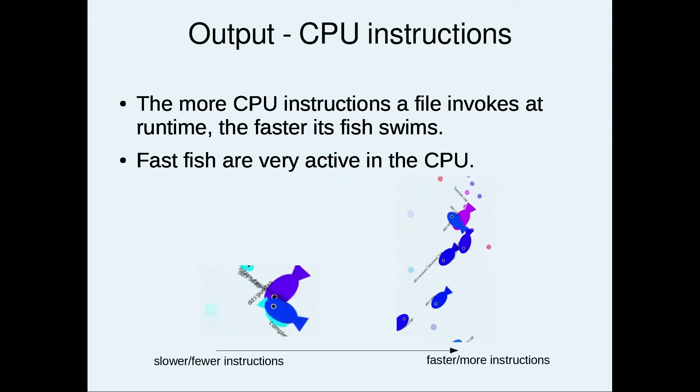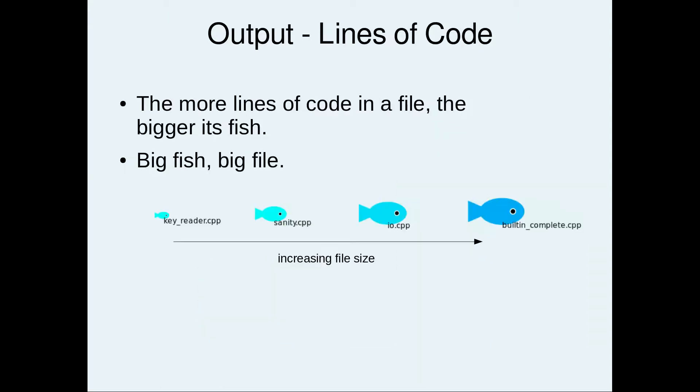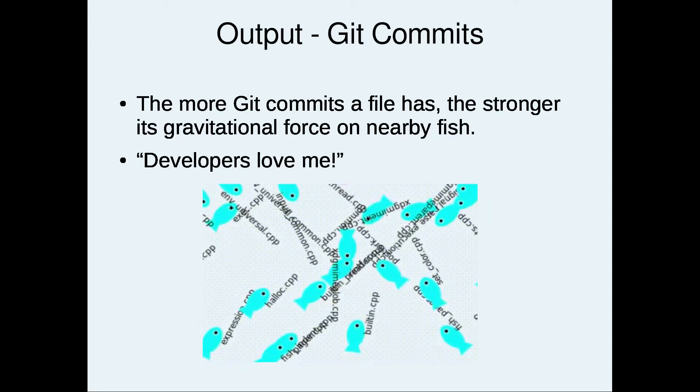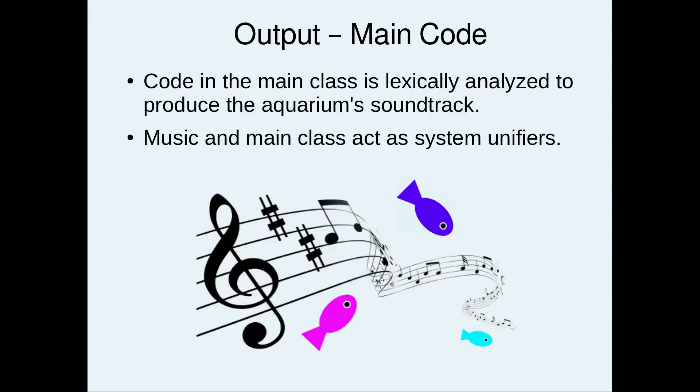The more CPU instructions a file invokes at runtime, the faster its fish swims. The more lines of code in a file, the bigger its fish. The more git commits a file has, the stronger its gravitational force on nearby fish. Code in the main class is lexically analyzed to produce the aquarium's soundtrack.